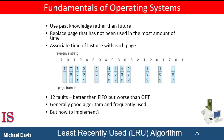We can think of this strategy as the optimal page replacement algorithm looking backward in time rather than forward. The result of applying least recently used replacement to our example reference string is shown here. The least recently used algorithm produces 12 page faults. Notice that the first five faults are the same as those for optimal replacement. When the reference to page 4 occurs, however, LRU sees that of the three frames in memory, page 2 was used least recently. So the LRU algorithm replaces page 2, not knowing that page 2 is about to be used again. When it then faults for page 2, LRU replaces page 3, since it is now the least recently used of the three pages in memory. Despite these issues, LRU replacement with 12 faults is much better than FIFO with 15.